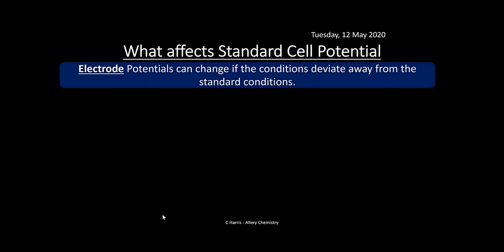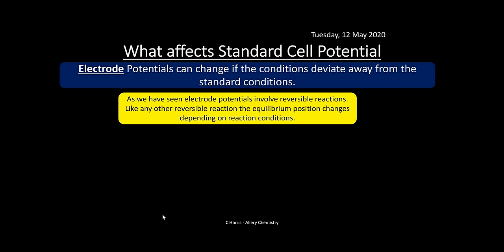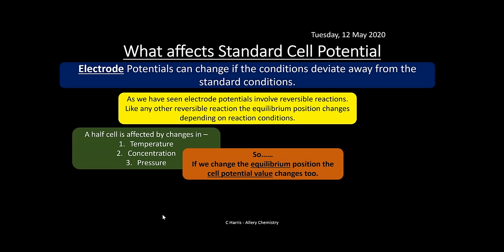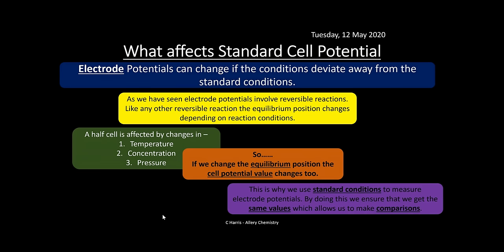Electrode potentials change if conditions deviate from standard. Half cells involve reversible reactions, and like other equilibria, the position shifts with temperature, concentration, or pressure changes — altering the cell potential. This is why standard conditions are used to measure E⁰, ensuring consistent, comparable values.